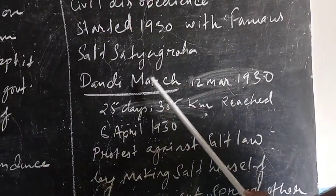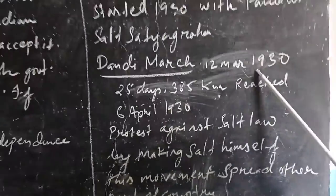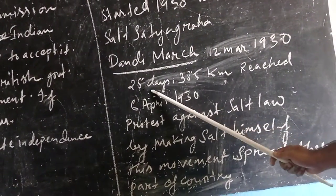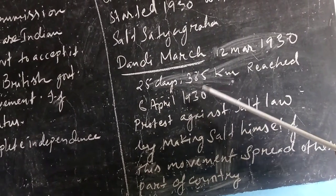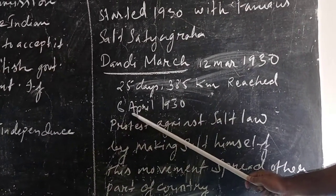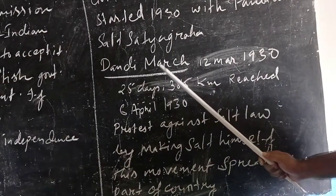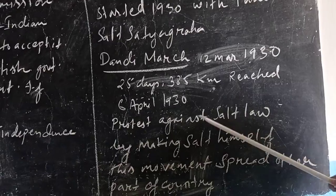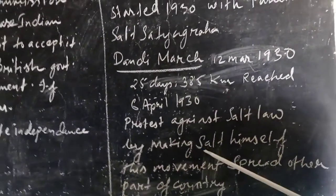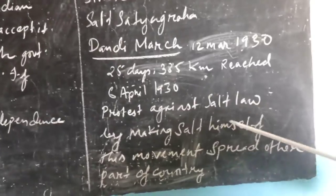What is the Salt Satyagraha? It is the famous Dandi March, which started on 12 March 1930. On foot, Mahatma Gandhi along with his followers walked for 25 days, covering 385 km, and reached Dandi on 6 April 1930. There they protested against the salt law by making salt themselves. This movement then spread to other parts of the country.